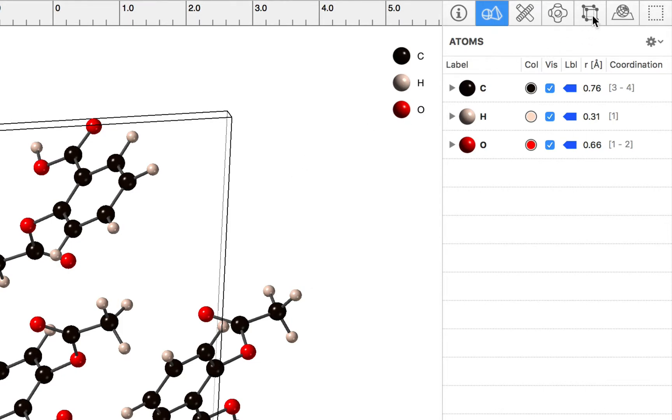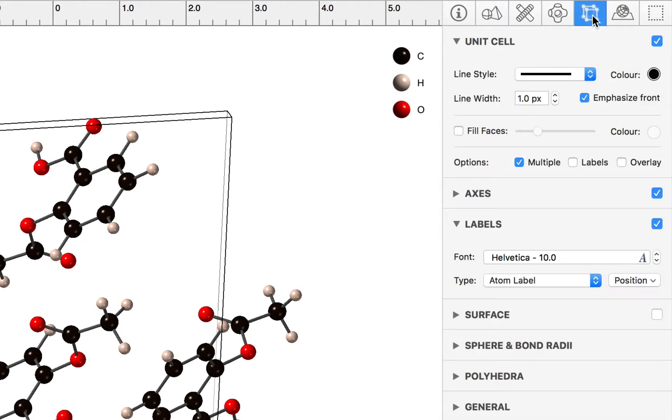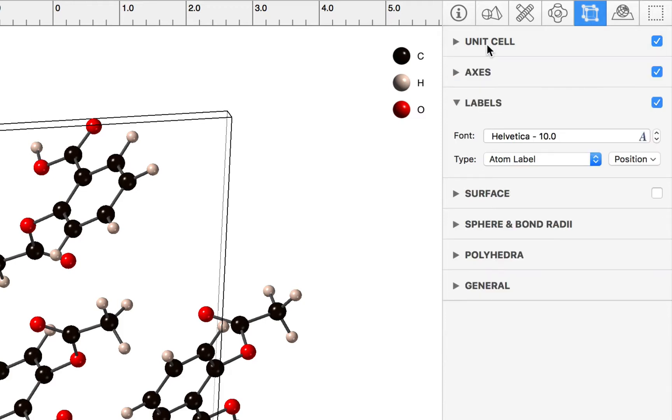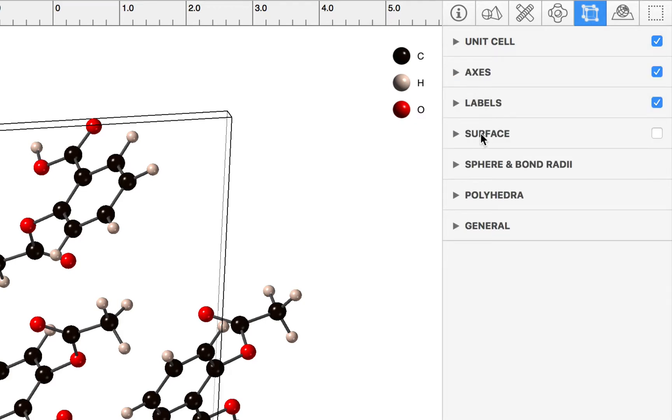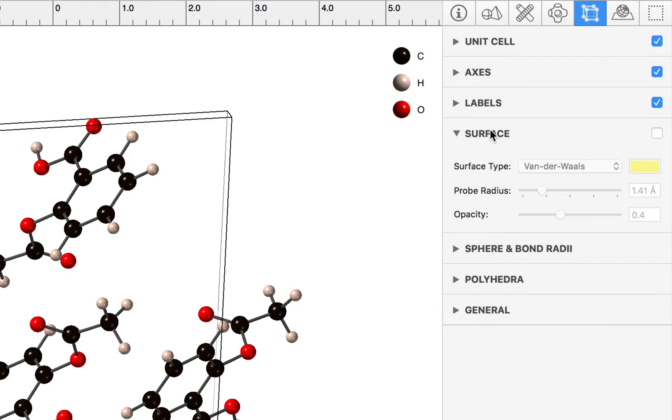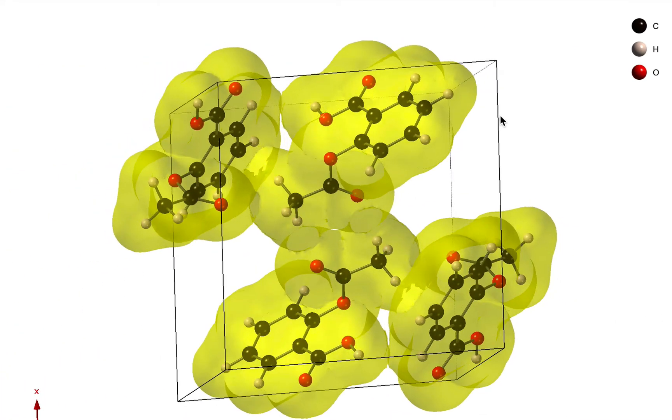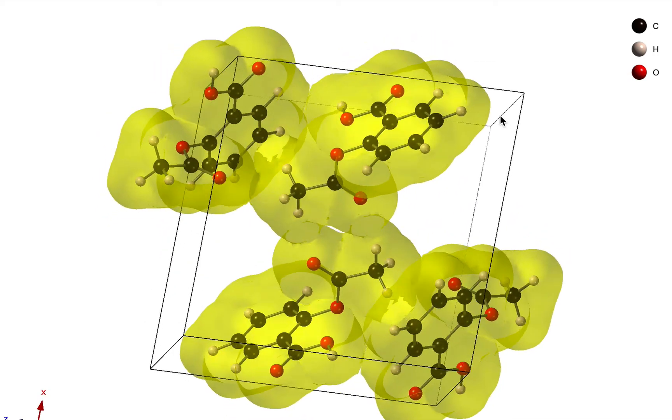Now we can customize our surface by going to the model inspector. I'm going to just go down to the surface group and let's turn the surface on. By default we have the van der Waals surface that we were looking at before.